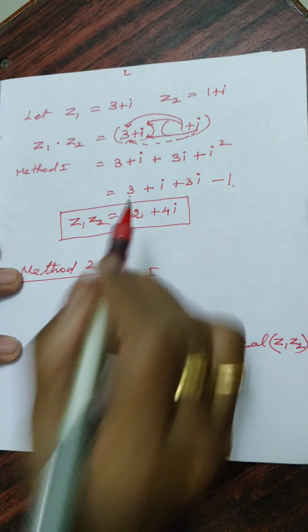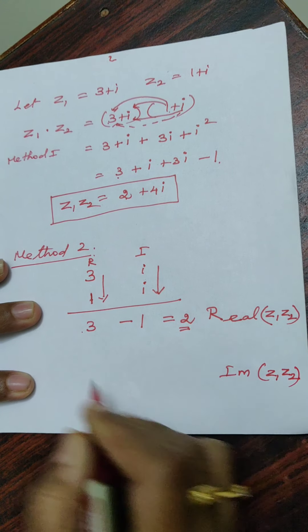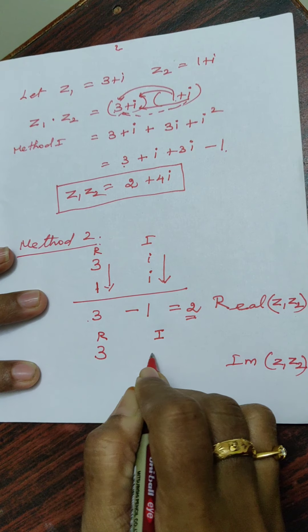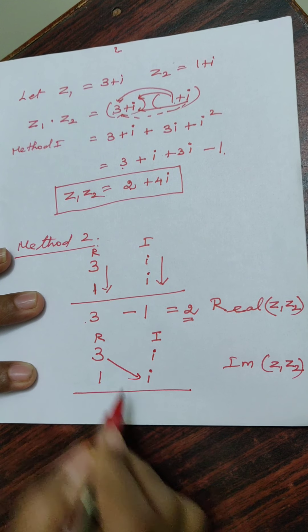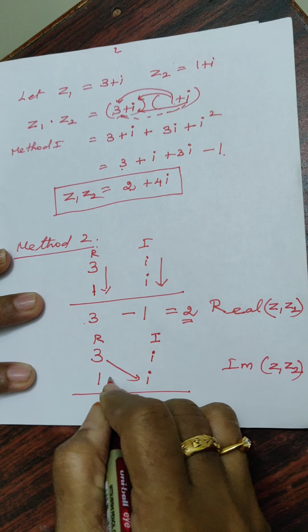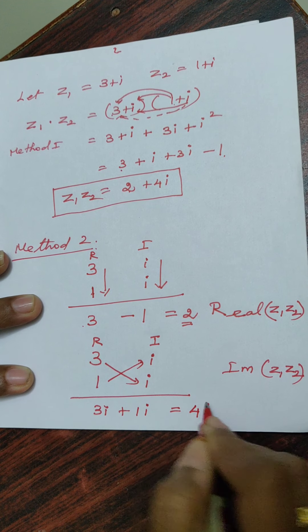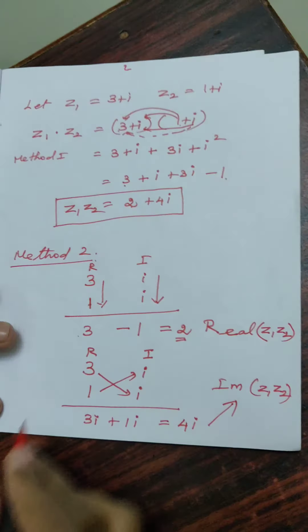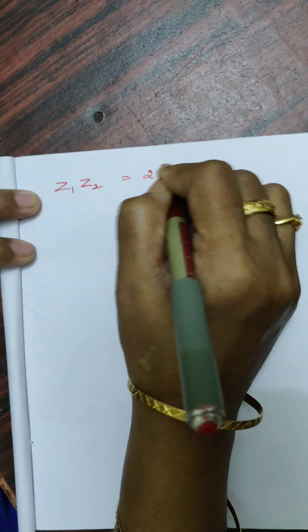Here also 2 — the same result. To get the imaginary part of z1 times z2, I write real and imaginary: 3, i, 1, minus i. Cross multiply: 3 into i is 3i, and 1 into i is plus 1i. So the answer is 4i. The imaginary part of z1 times z2 is 4i.